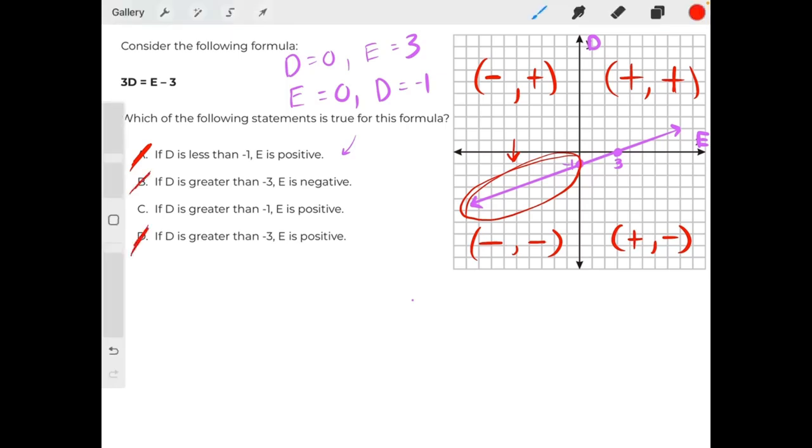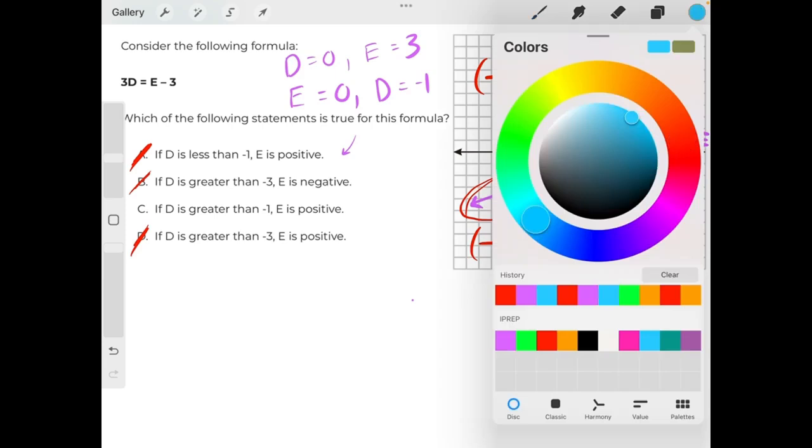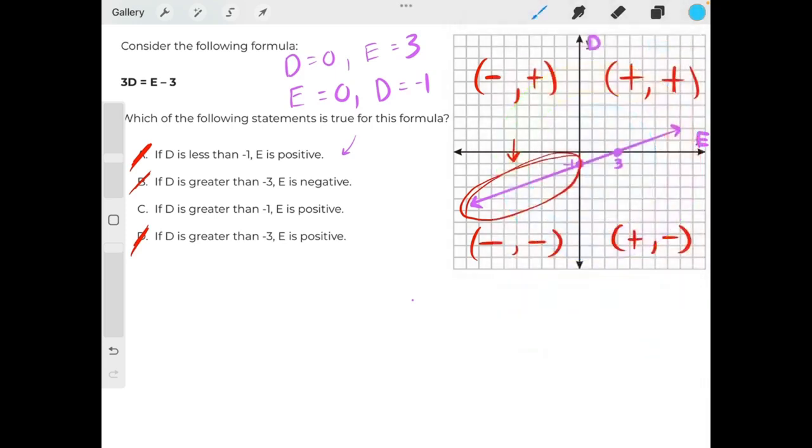Leaving only one possible correct answer, but we will still double check it just to make absolutely sure. If d is greater than negative 1, then e is positive. Greater than negative 1 are all of these values over here. e is our x value, and they're saying that e is positive when we are greater than negative 1. And that is true because all of these values in the blue area are all positive, making C our correct answer.